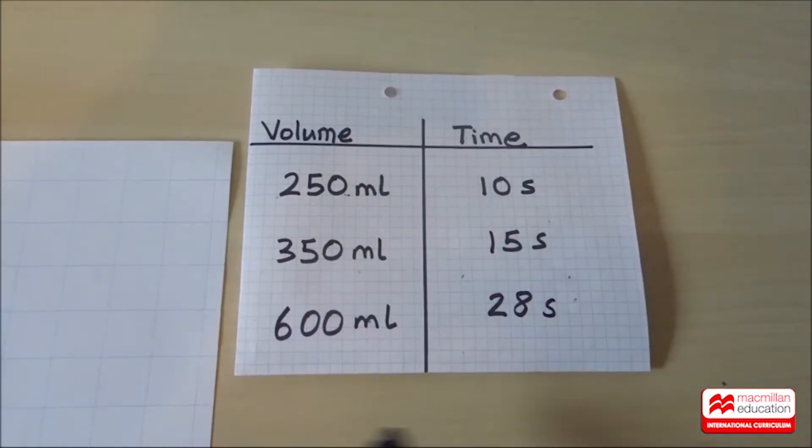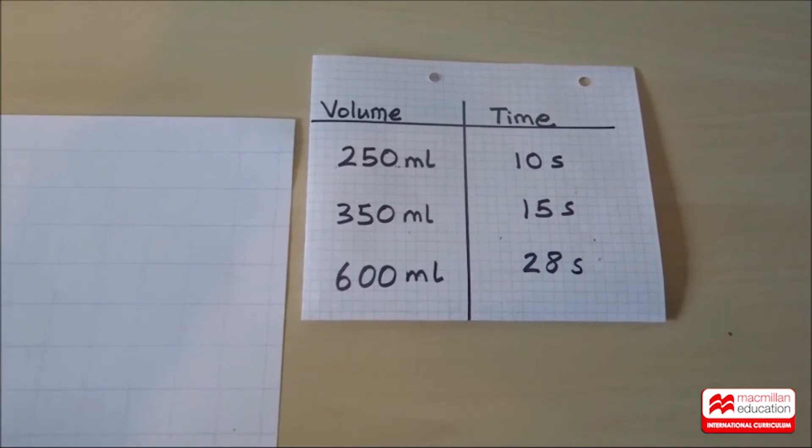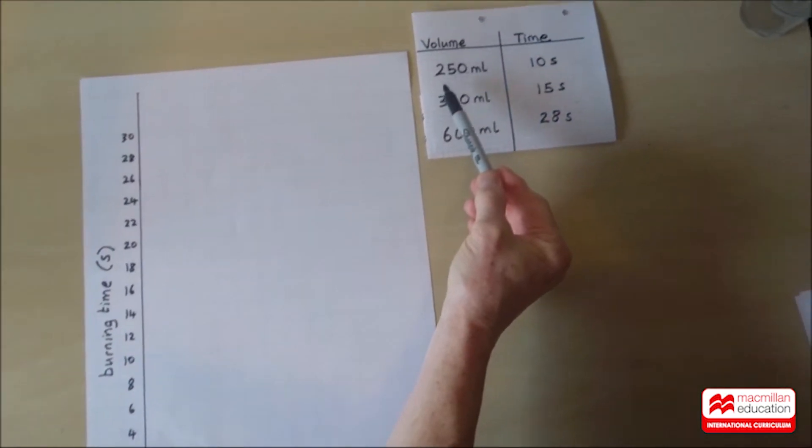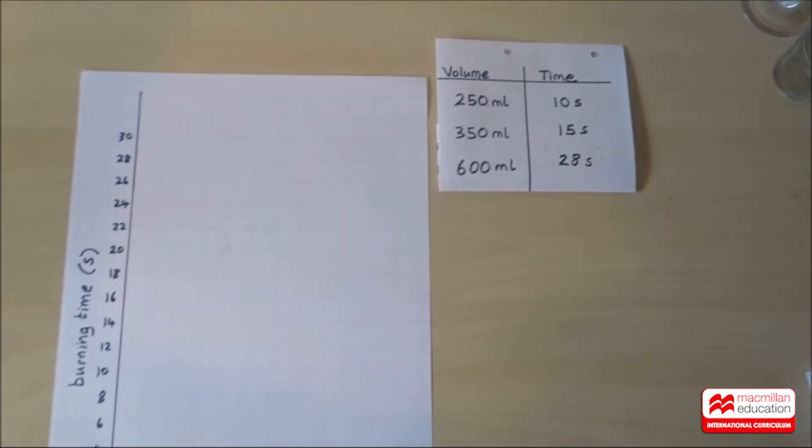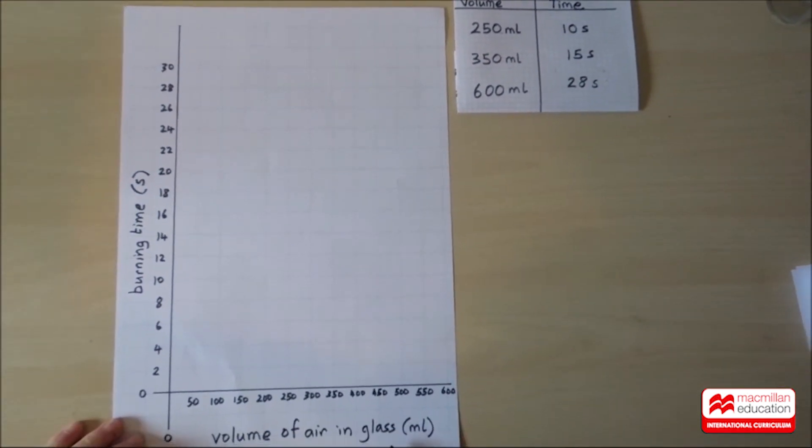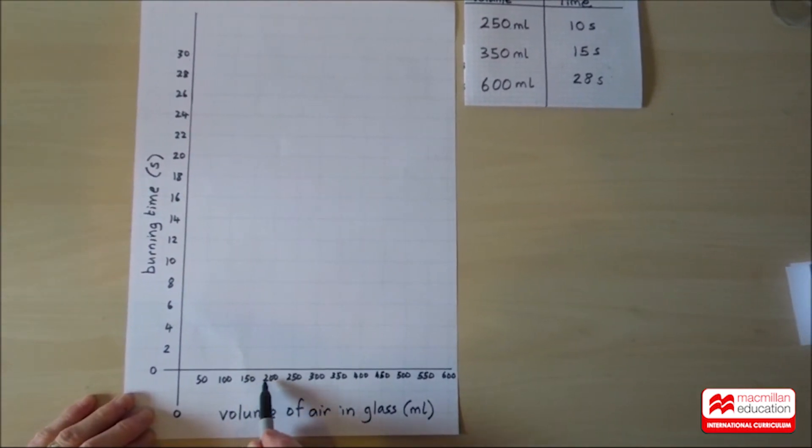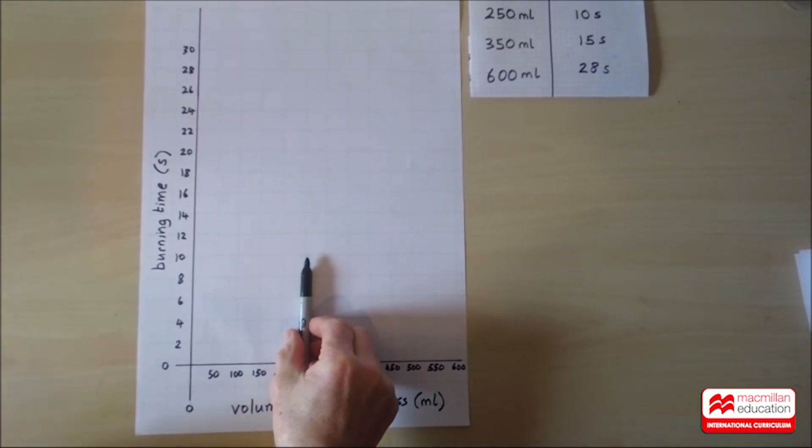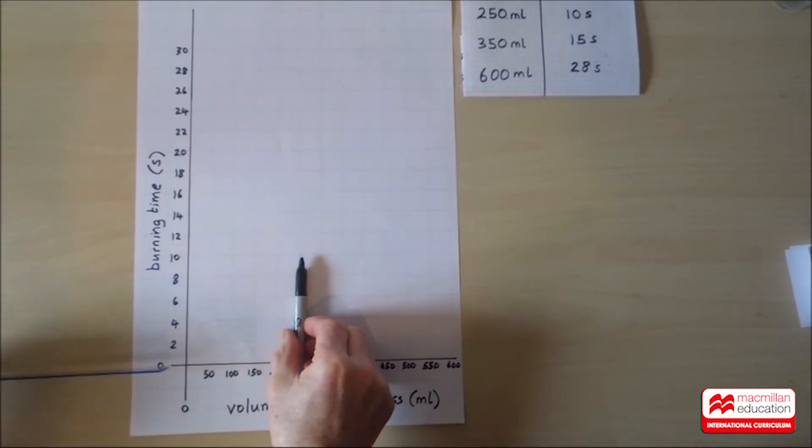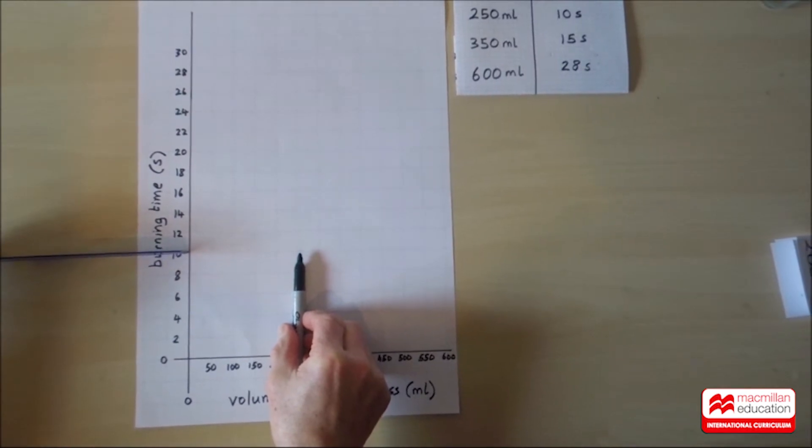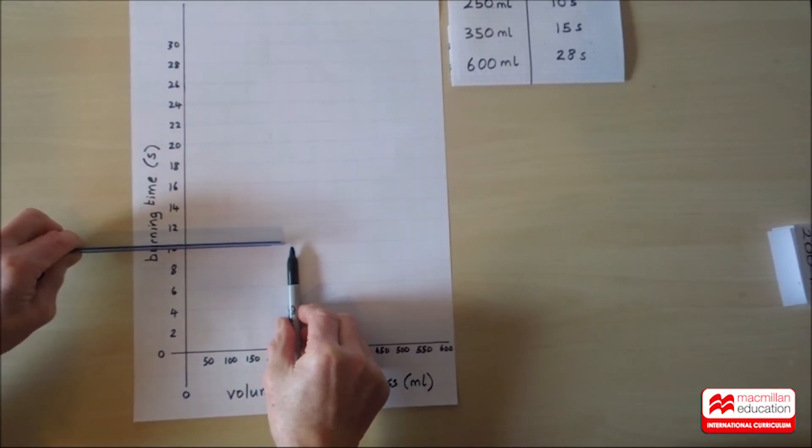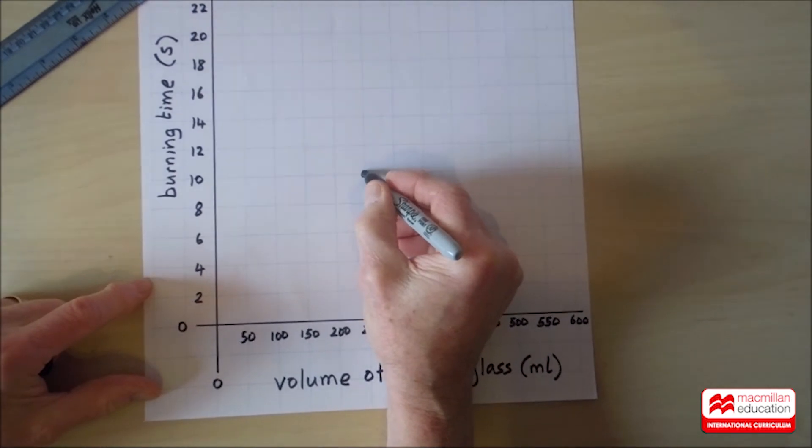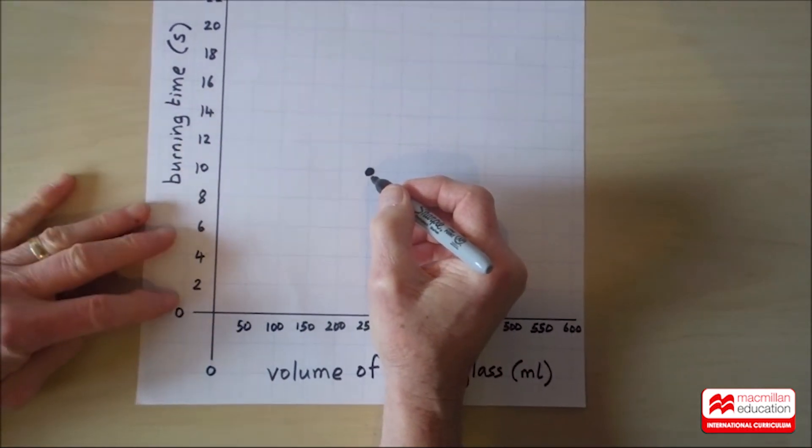Now we have a chance to turn our results into a shape on a graph. The first result is a volume of 250 mils which took 10 seconds. Let's find the volume of 250 along the graph line. 200, here it is 250. I'll put my pen along this line. Then we need to find the time of 10 seconds because that's the burning time for this size of glass. Here it is. And the horizontal line means that these two lines connect here. And that's the place where I'm going to put my very first point. We call this a data point on the graph.